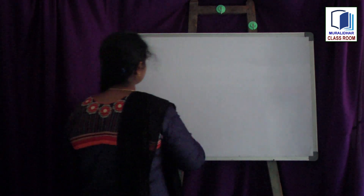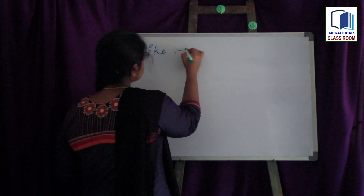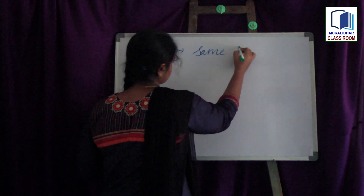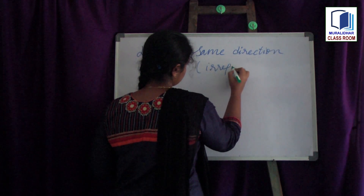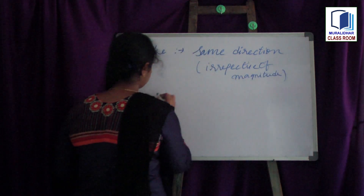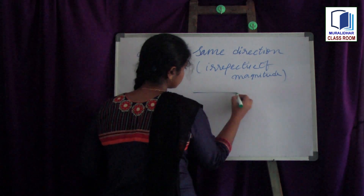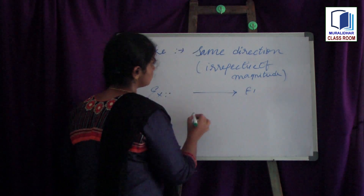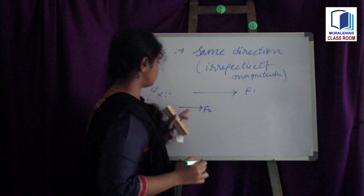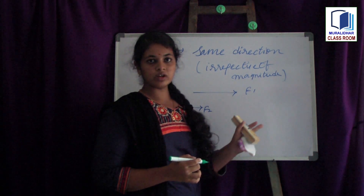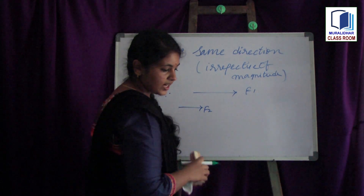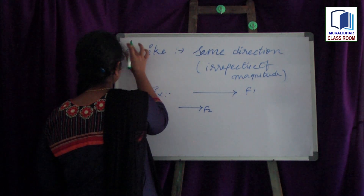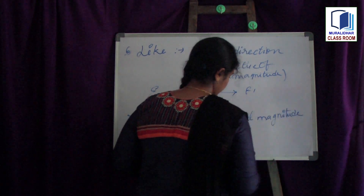The next classification is like forces. Like forces means the forces which act in the same direction, irrespective of the magnitude. For example, this is force F1 and this is force F2 — even though the magnitudes of F1 and F2 are not equal, both forces are towards the same direction. So these forces can be said as like forces.